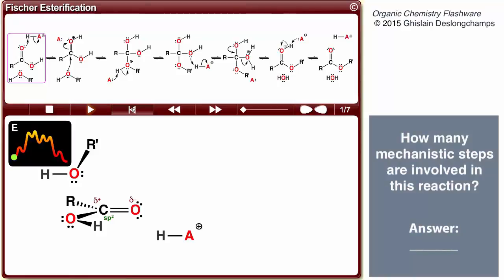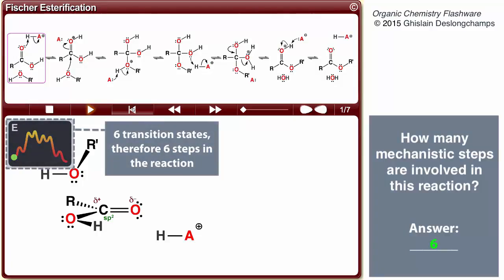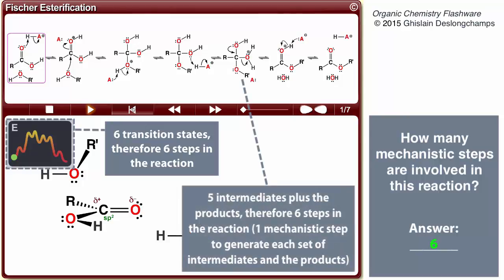How many mechanistic steps are involved in this reaction? Six mechanistic steps are involved. You can figure this out by counting the number of transition states in the energy diagram, or by counting the number of intermediates. There is one step to generate each of the four intermediates, and add one for the step that generates the product.